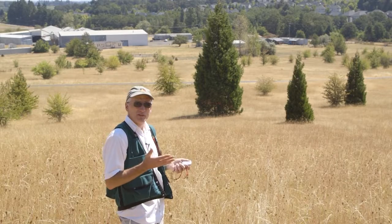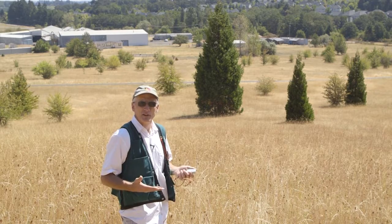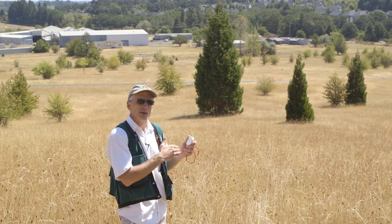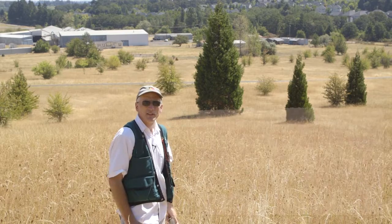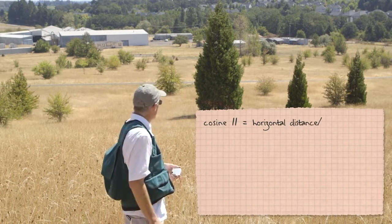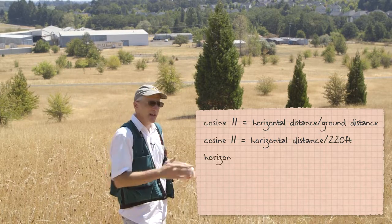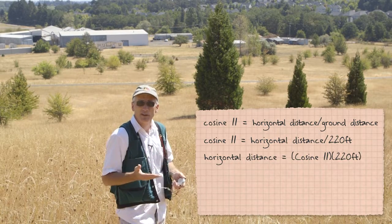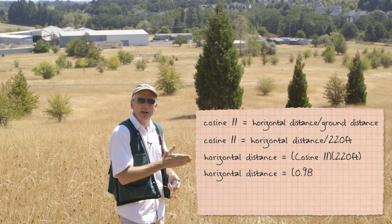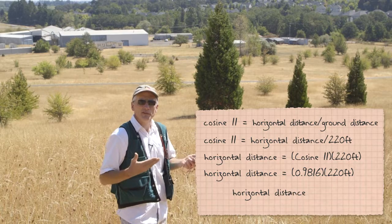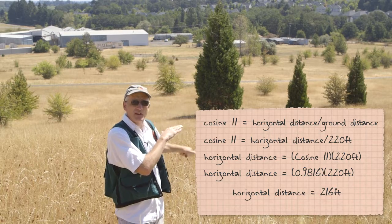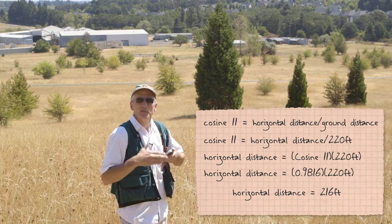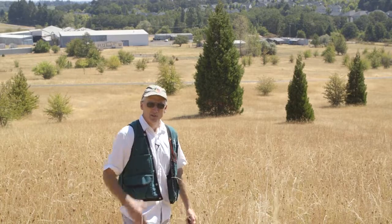So if our angle of depression is 11 degrees, what's cosine of 11 degrees? We can refer to our clinometer again with the handy cosine table found on the side. Cosine of 11 degrees equals 0.9816. From our cosine function, to determine our horizontal distance, I multiply my ground distance by 0.9816: 0.9816 times 220 gives us 215.9, or roughly 216 feet. Not a dramatic difference from ground distance, but that difference becomes greater on steeper slopes. So we have our horizontal distance.